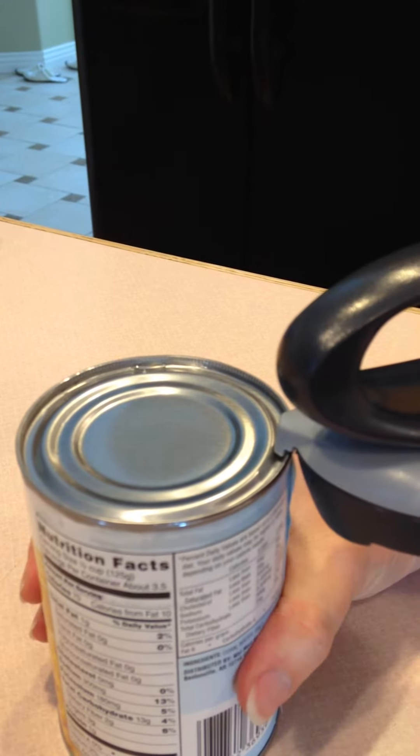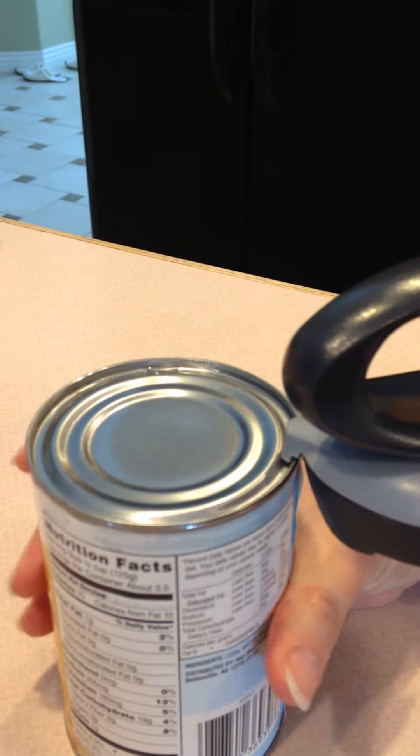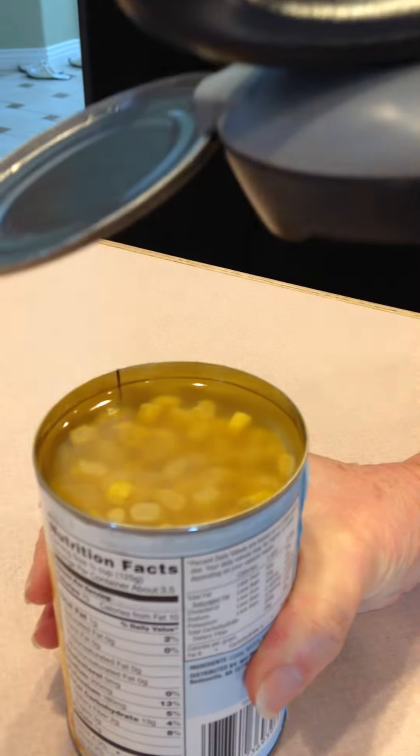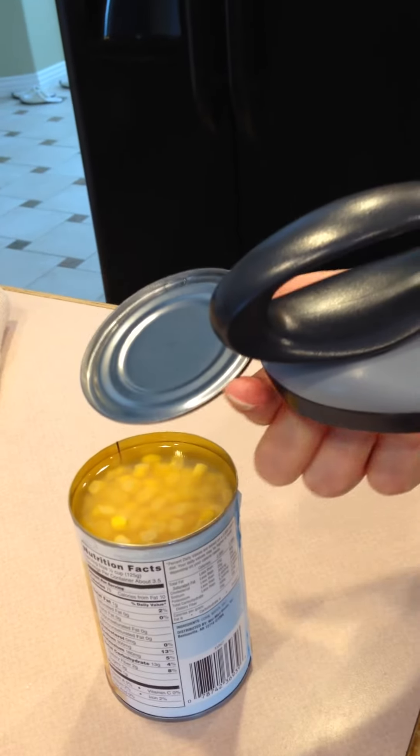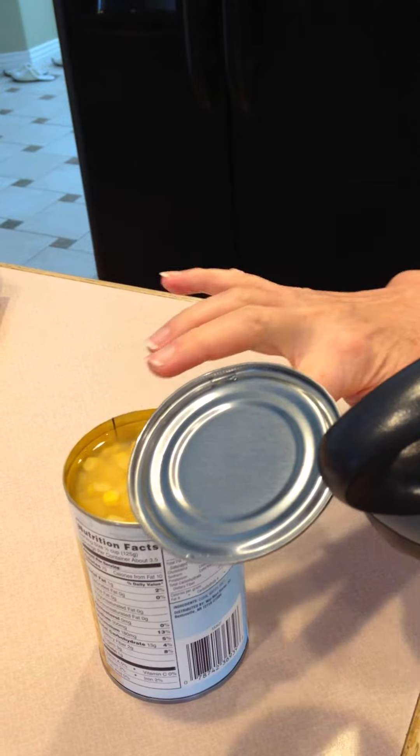Now the gripper is holding onto the top of the lid. Grab the can and lift up. There's no sharp edges here and there's no sharp edges on the can.